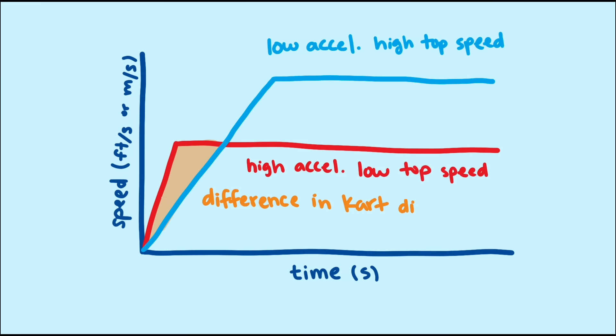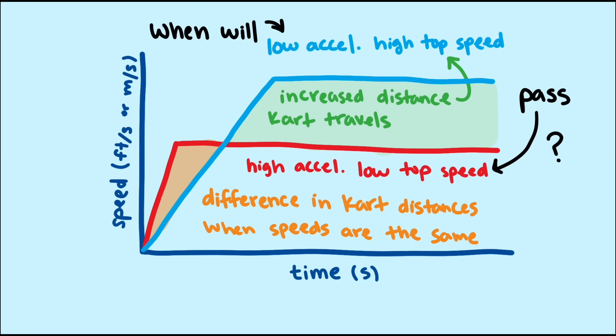Now we don't really need values to reason through the situation. We can reason with areas. This area here is the difference in the distance between the two carts at the point when their speed is the same. But this area here represents the increased distance the top speed cart will travel after the moment when the speeds are the same. So when will the high speed car pass the high acceleration car? When the area here is equal to the area here. And every second after that the high speed cart is pulling further and further away in the race.